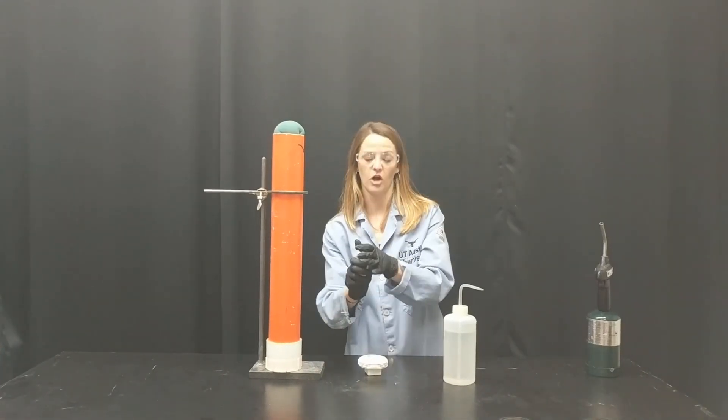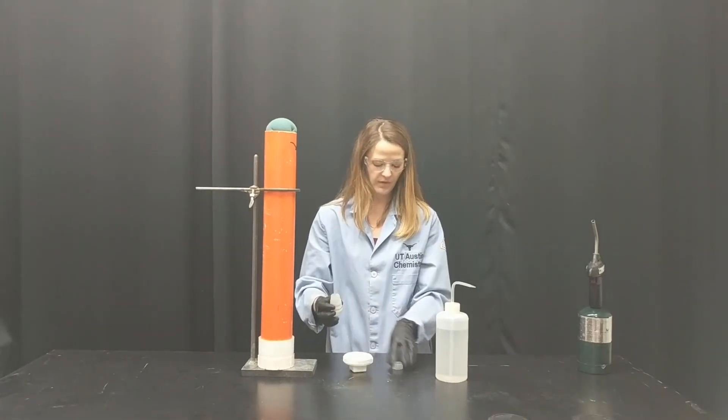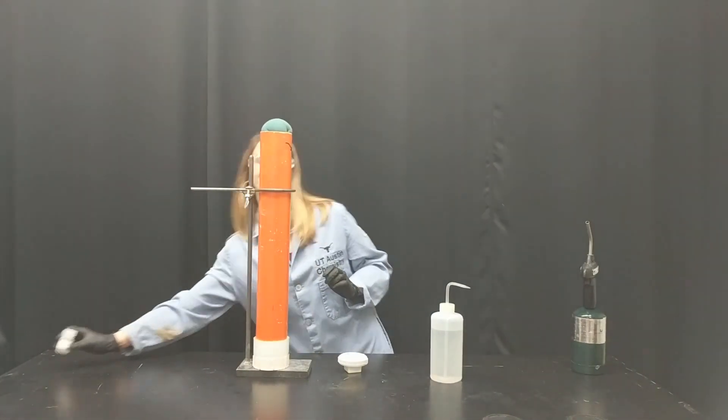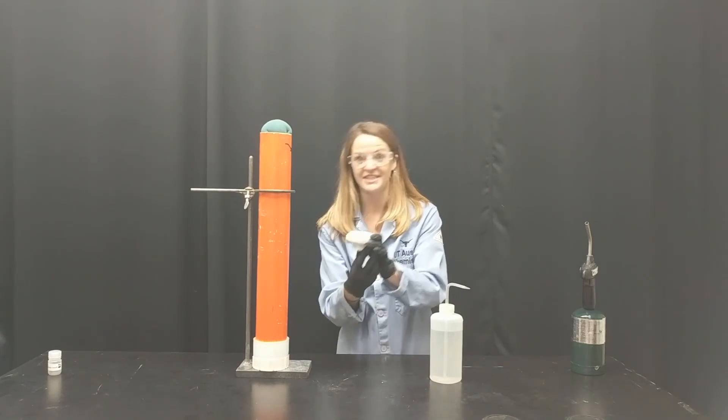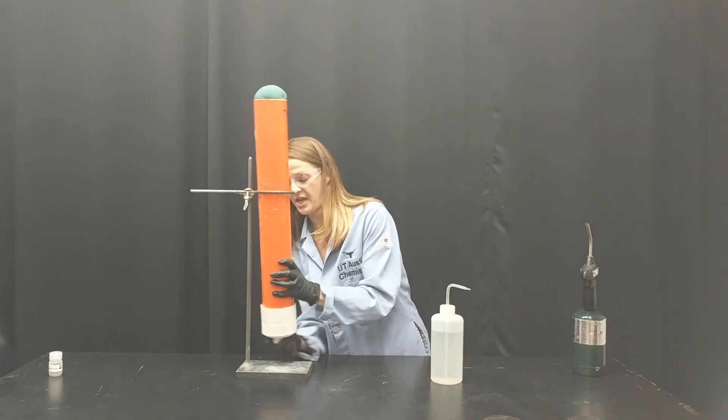Now I'm going to add my calcium carbide. The calcium carbide is going to go directly here in the center and then I'm going to put my plastic off to the side. Now that my calcium carbide is here, I'm going to add this to the bottom of my pipe and screw it in as tightly as I possibly can.